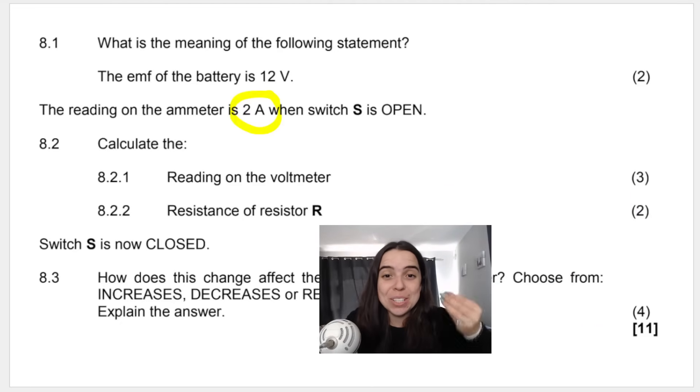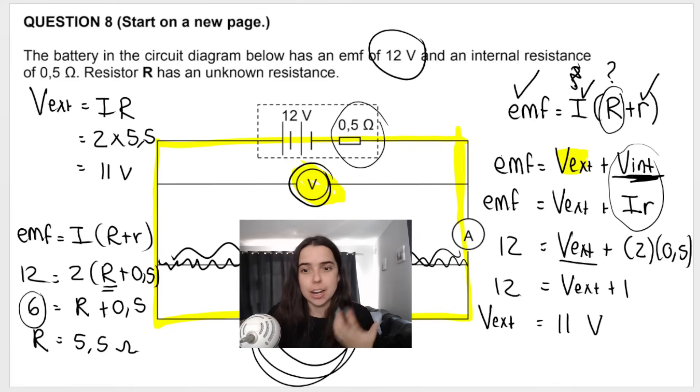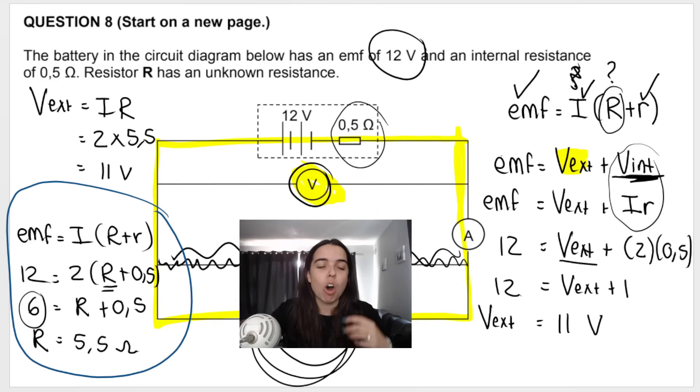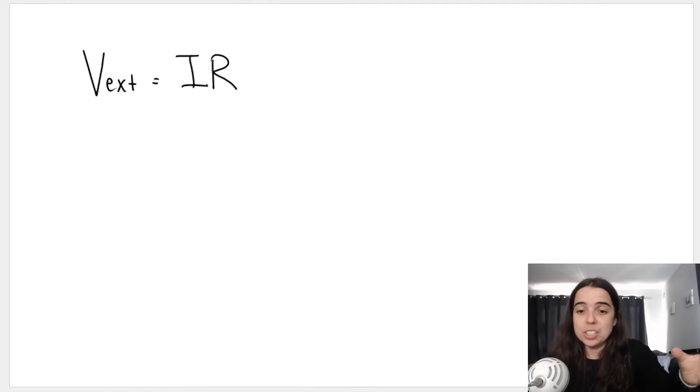And then if we take a look at 8.2.2, now they actually ask us to calculate the resistance of resistor R, which I did in the previous question. If this ever happens in the exam, which as you can see, I just did it. It just happened. What I would recommend you do is you rewrite your working out. So you see, I got big R over here. I would redo that working out. Obviously, another way to get big R, if you have just worked out, say you did this first method that I did over here, and you've just worked out that your V external is 11. And then from there, you want to work out big R. This is how you would do it.